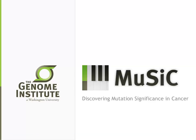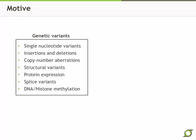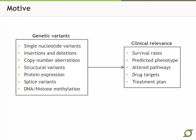This video is a quick guide to MuSiC, a suite of tools from the Genome Institute at Washington University in St. Louis. The motive behind these tools is to translate genetic variants, either somatic or germline, into meaningful discoveries in cancer or other genetic diseases.